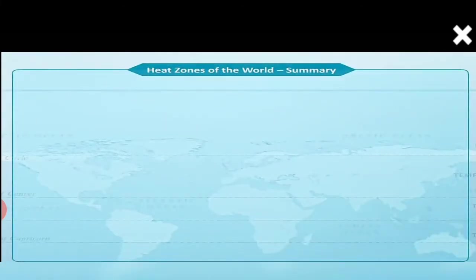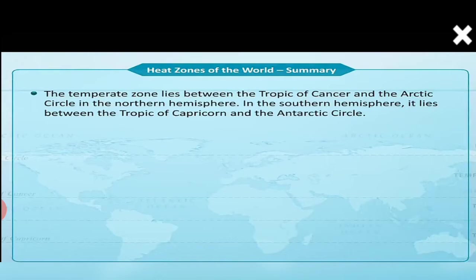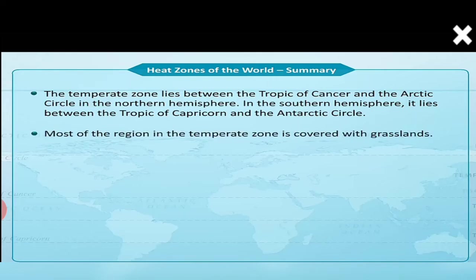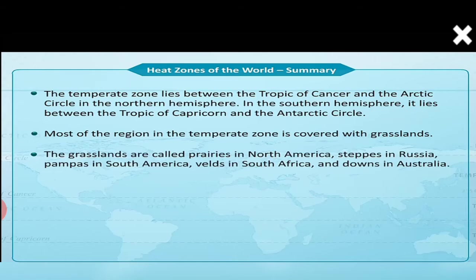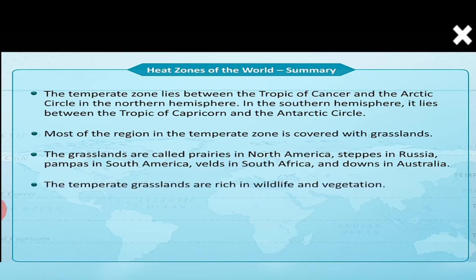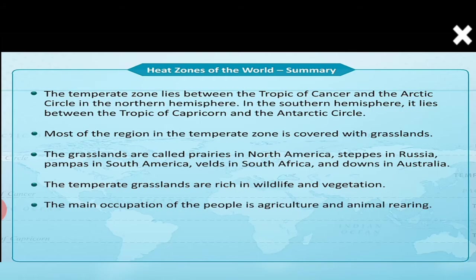Let us recall what we just learnt. The temperate zone lies between the Tropic of Cancer and the Arctic Circle in the northern hemisphere, and between the Tropic of Capricorn and the Antarctic Circle in the southern hemisphere. Most of the region in the temperate zone is covered with grasslands — prairies in North America, steppes in Russia, pampas in South America, veld in South Africa and downs in Australia. The temperate grasslands are rich in wildlife and vegetation. The main occupation of the people is agriculture and animal rearing.